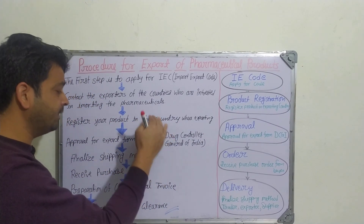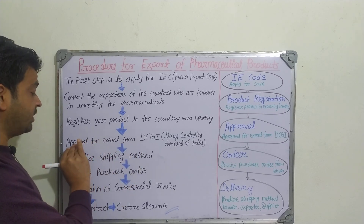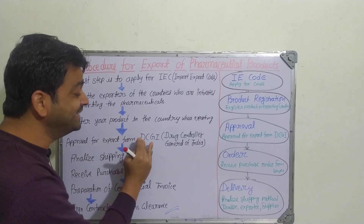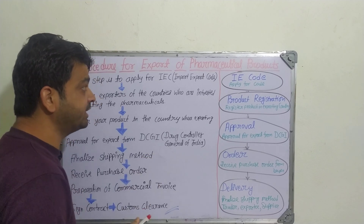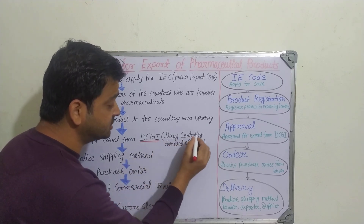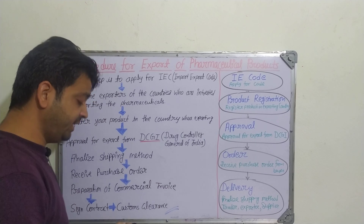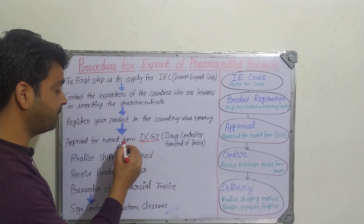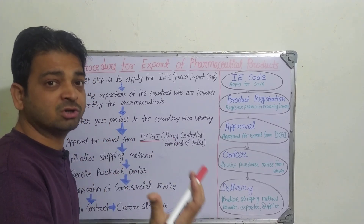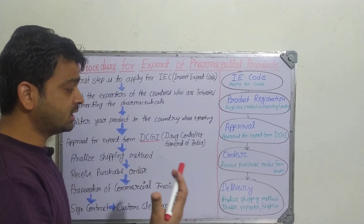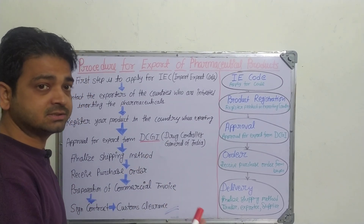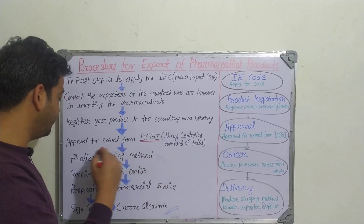After registering, you have to apply for approval for export from DCGI — the Drug Controller General of India. At their office, you apply to export a specific product to a specific country, for example Australia. Once they review the application, they will give the approval.